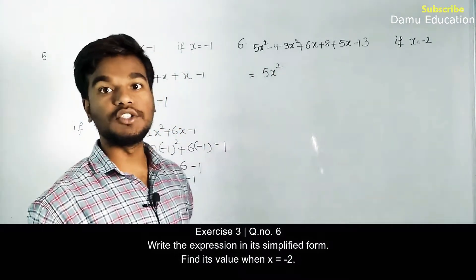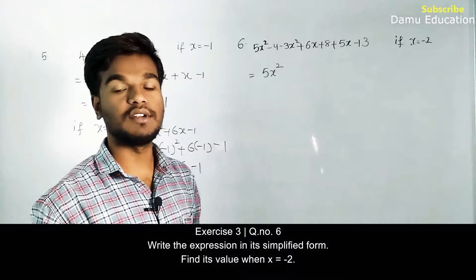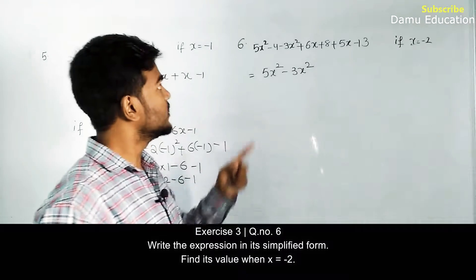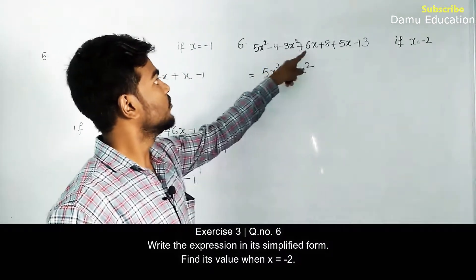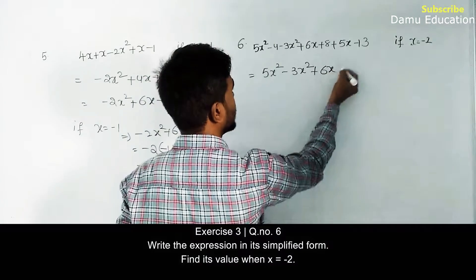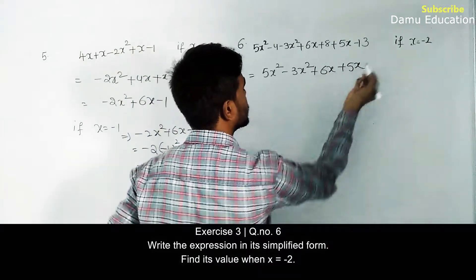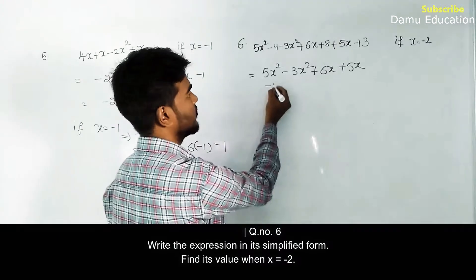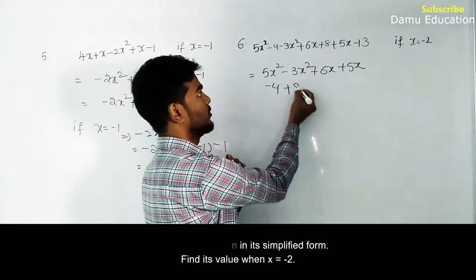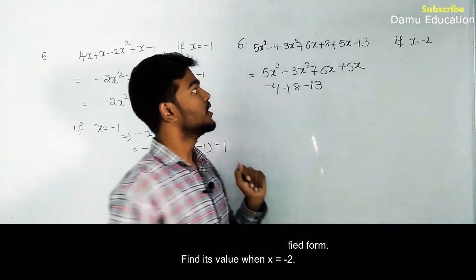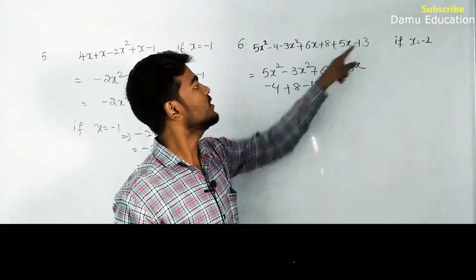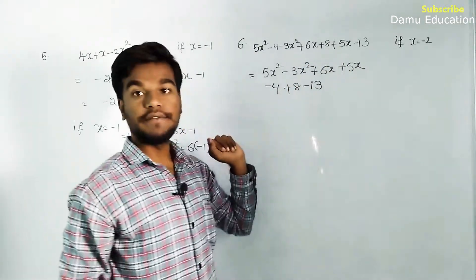Then the other x² term is -3x², then the x terms: +6x and +5x. Then the constants: -4, +8, and -13. This is our expression with 7 terms, same as the original.